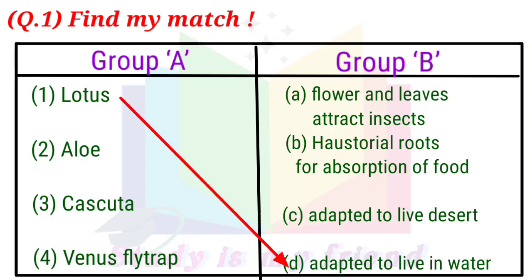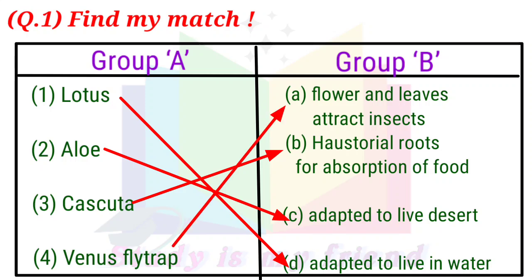Answer: 1. Lotus — D. Adapted to live in water. 2. Aloe — C. Adapted to live in desert. 3. Cuscuta — B. Haustorial roots for absorption of food. 4. Venus Flytrap — A. Flower and leaves attract insects.